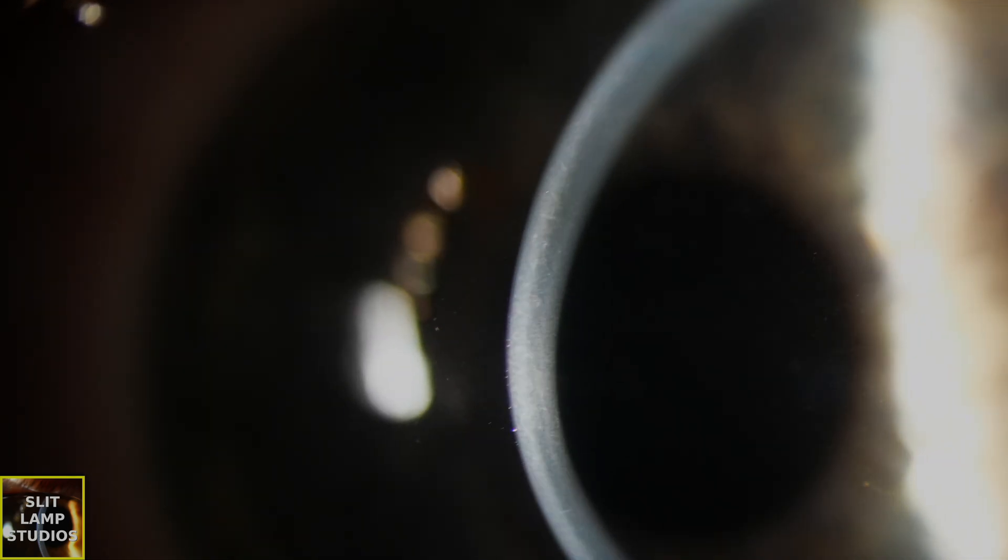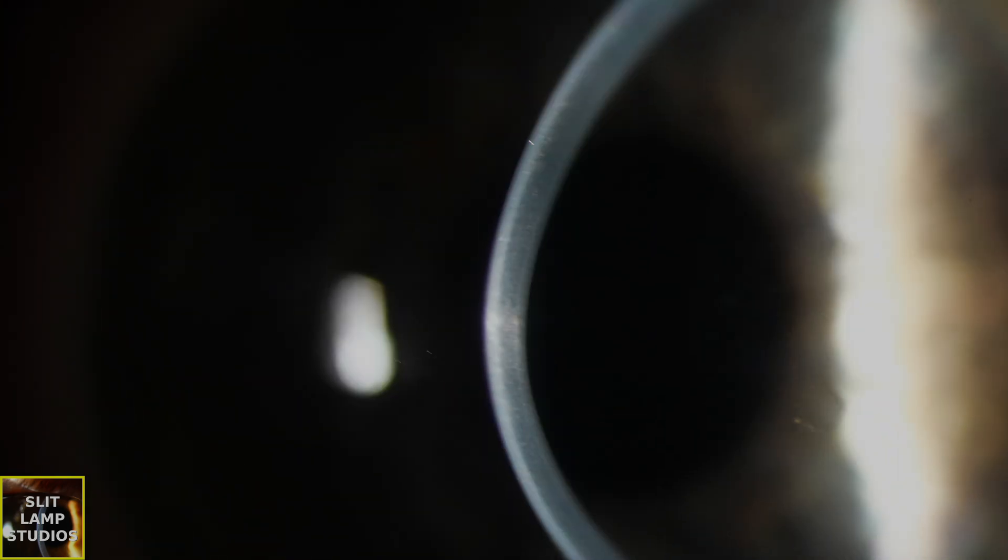So as always, I'd always recommend to look at the topography, take a history, ask about eye rubbing, invert the lids and look for subtarsal papillary changes which might be a sign of allergic eye disease or eye rubbing, which is known to be associated with keratoconus.